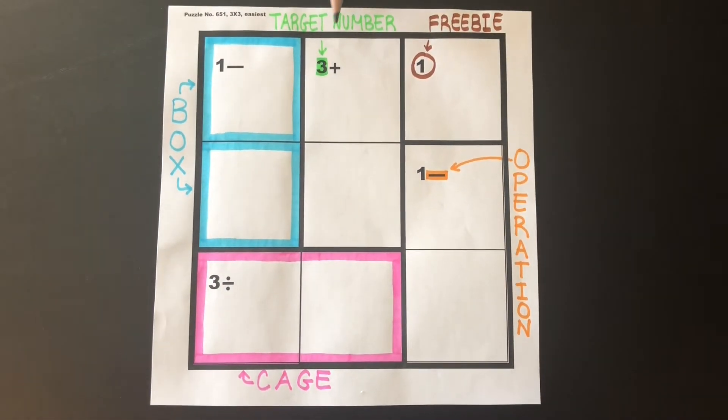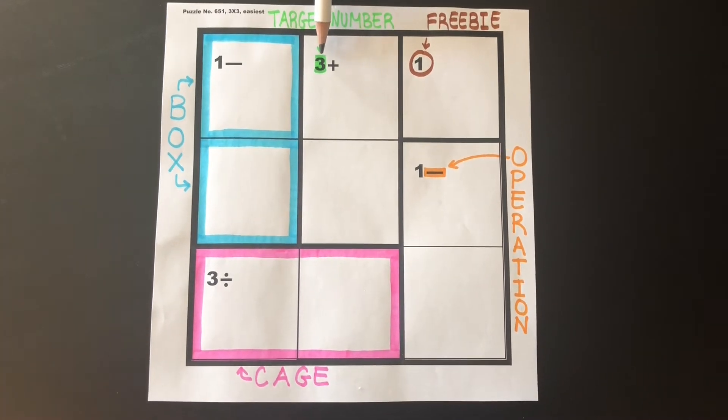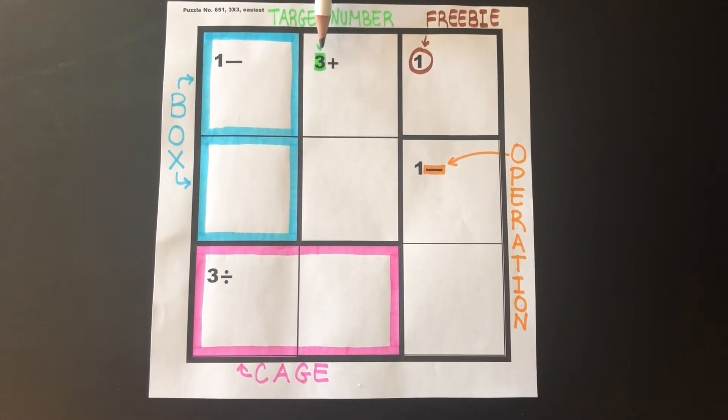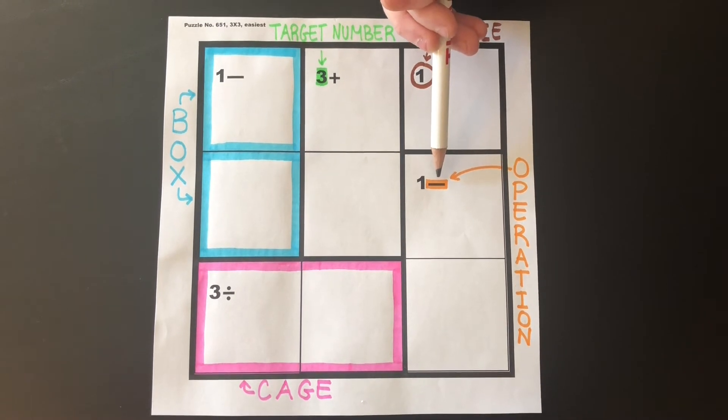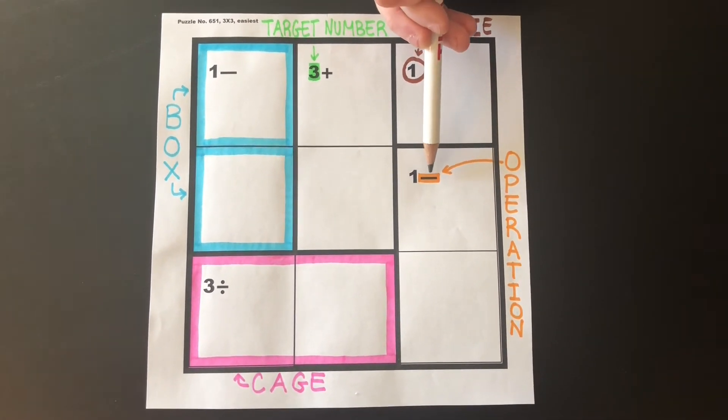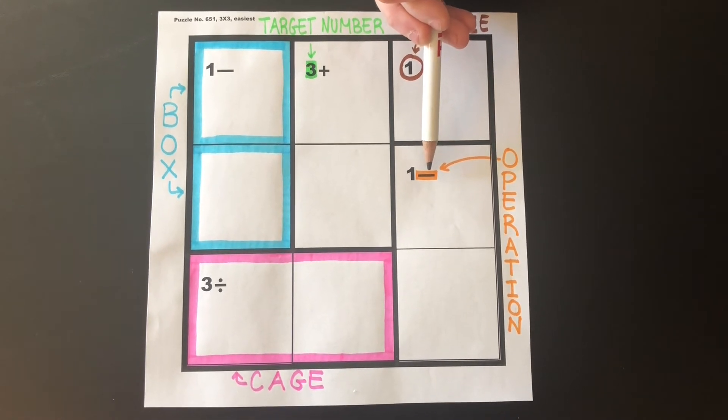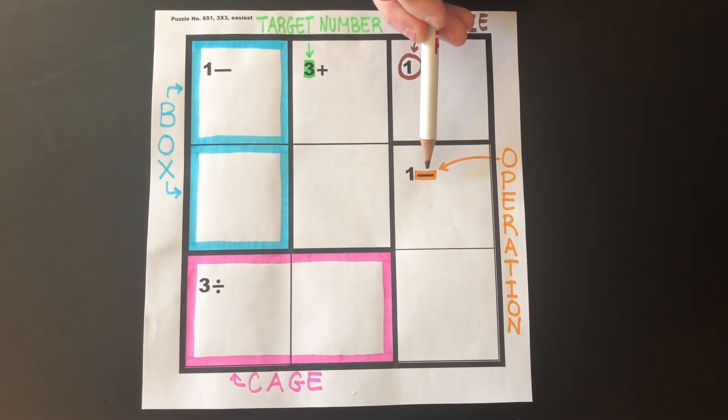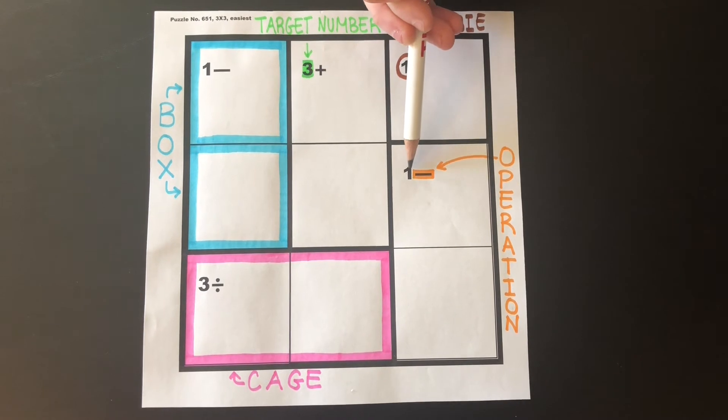A target number is the number in each cage. Here it's a three. An operation is the symbol next to the target number. Here it's a subtraction sign. The operation tells you what is used to calculate the target number.